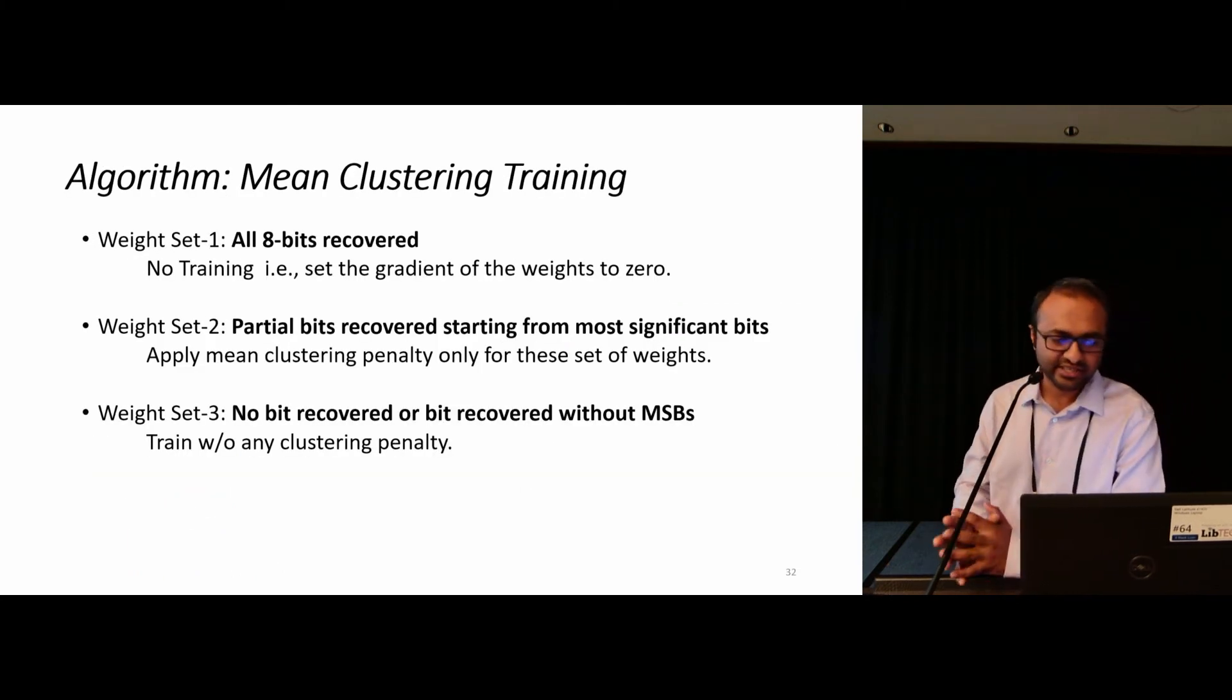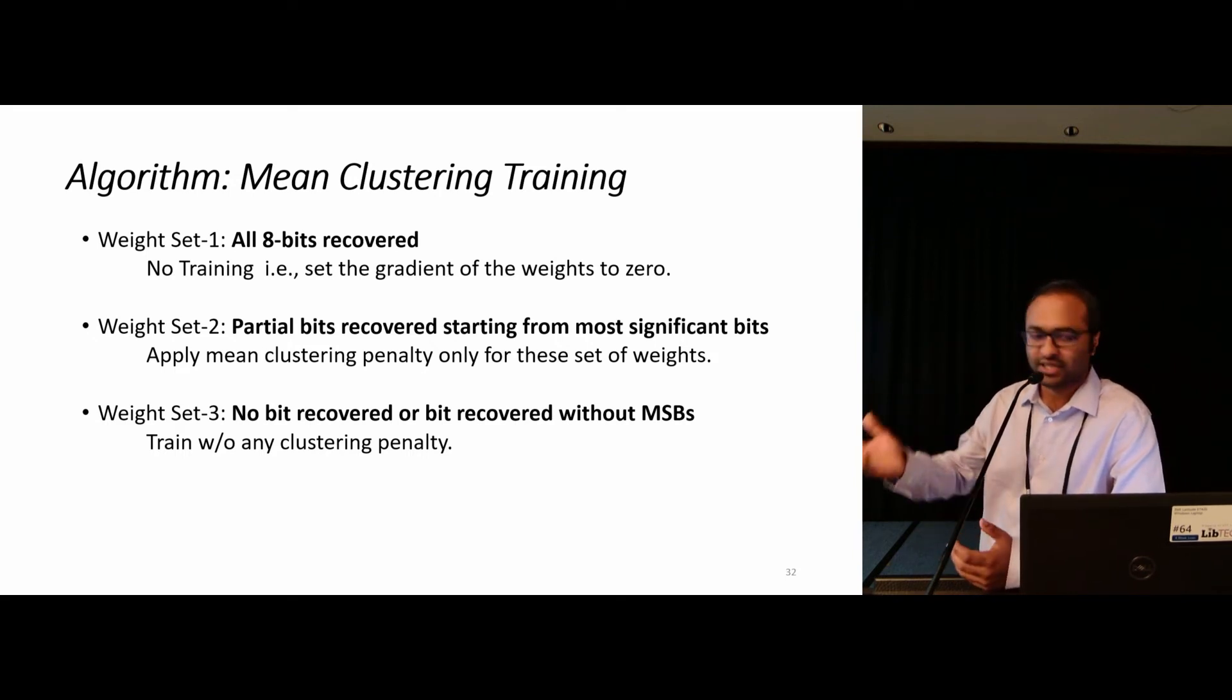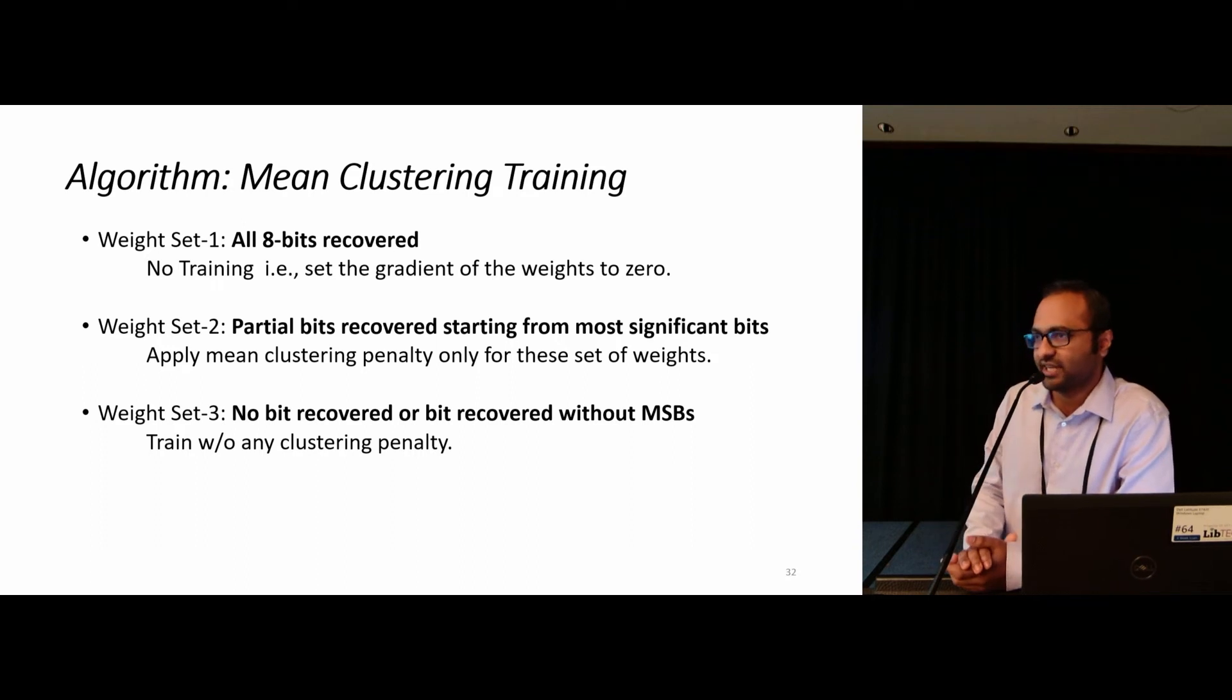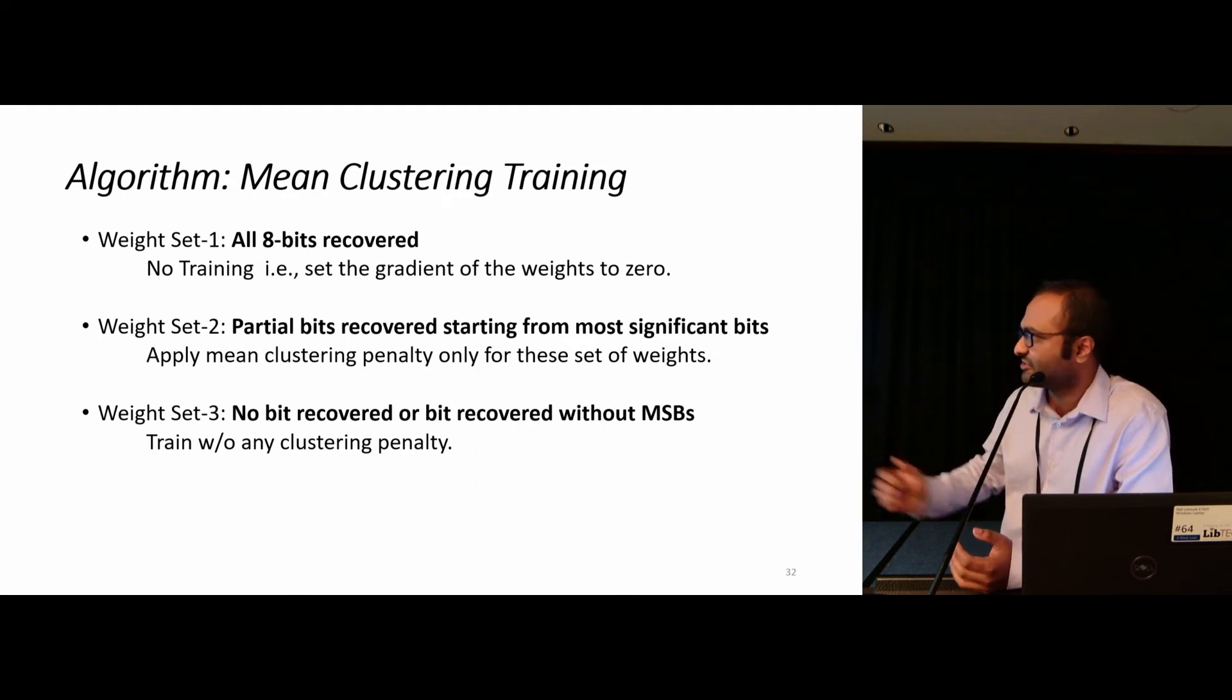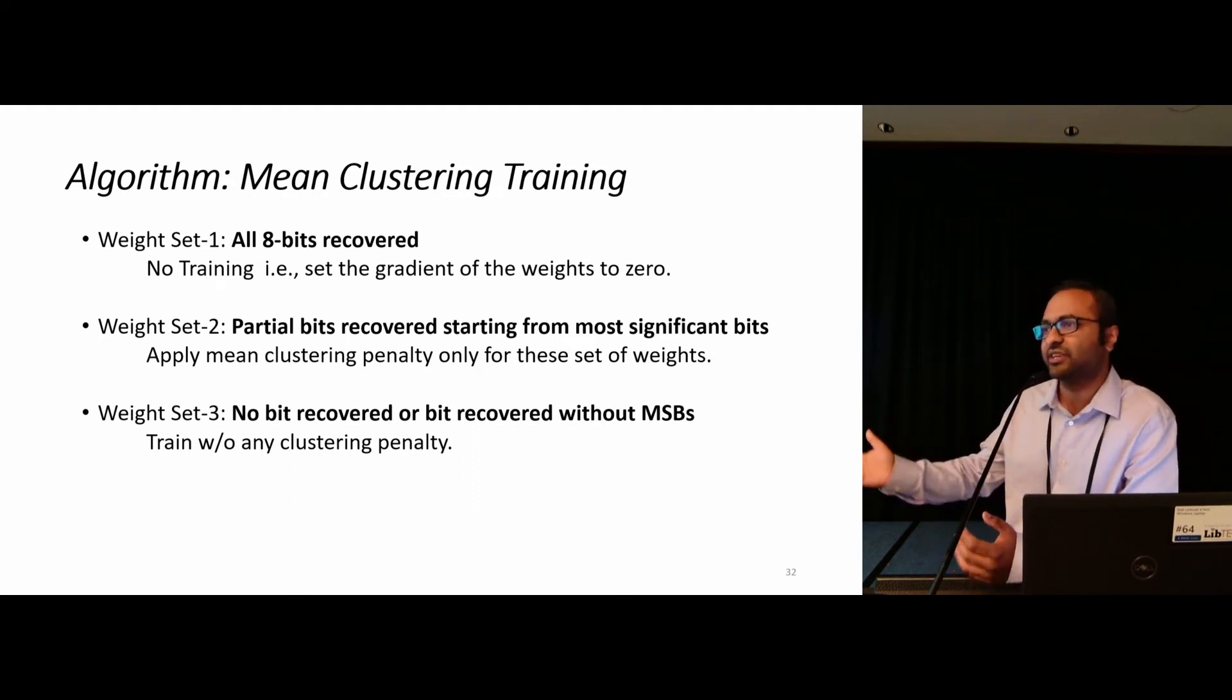So for mean clustering training, we could have three possible scenarios. For weight set one, we recovered all the bits. We just do not apply any training for that weight set one. For weight set two, we have partial bit recovery starting from MSB. We apply the clustering training. For weight set three, there was no bits recovered, so we train them in a traditional cross-entropy fashion.